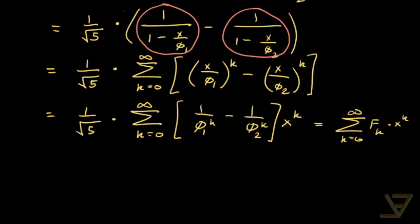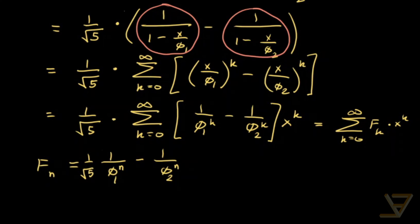We can compare coefficients because of the uniqueness of power series in an interval around 0. That means f(n) for any non-negative integer n is equal to 1 over square root of 5 times (1/φ₁^n minus 1/φ₂^n). So we already have a formula for the Fibonacci numbers.